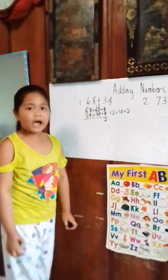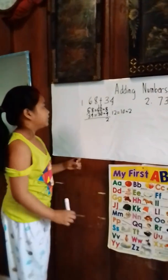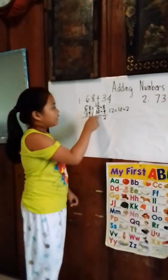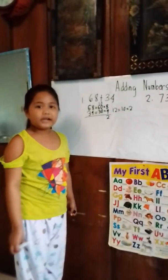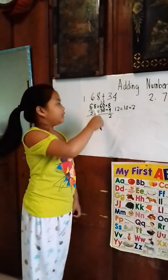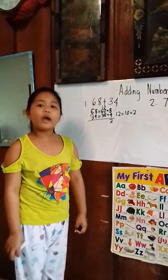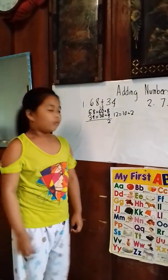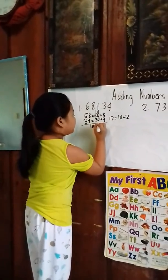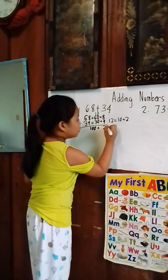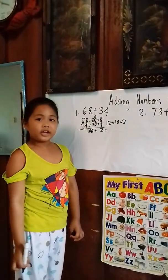Now we will add the tens place. 10 plus 16 equals 70. 70 plus 30 equals 100. 100 plus 2 equals 102.